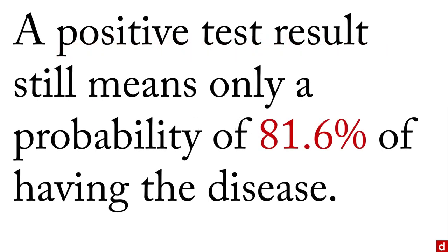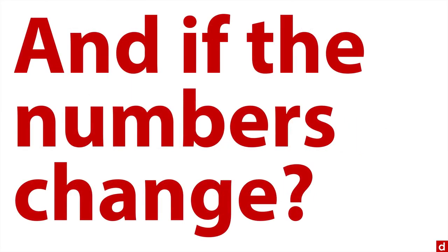Here's what that means: a positive test result still means only a probability of 81.6% of having the disease. So the test is advertised as having 90% accuracy, but if you test positive there's really only an 82% chance you have the disease. Now, that's not a really big difference — but consider this: what if the numbers change?